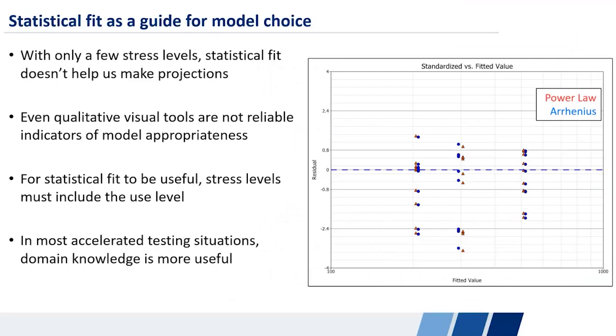So on the right side, you have the remaining errors after you fit a power law model or an Arrhenius model. They don't help us out so much. You can see that these are not very easily distinguishable plots. You can't see which one is a better fit.